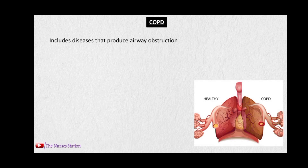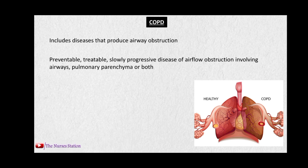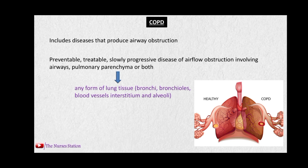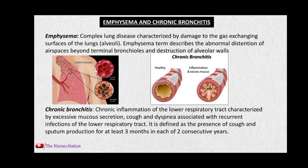In this video we will talk about chronic obstructive pulmonary disease, also called COPD. COPD includes diseases that produce airway obstruction in the lungs. It is a preventable, treatable, and slowly progressive disease. COPD progresses slowly and causes increased airflow obstruction involving the airways, the pulmonary parenchyma, or both. The pulmonary parenchyma includes any form of lung tissue including the bronchi, bronchioles, blood vessels, interstitium, and alveoli. In COPD, the obstruction can be reversed to a certain extent but is not fully reversible.